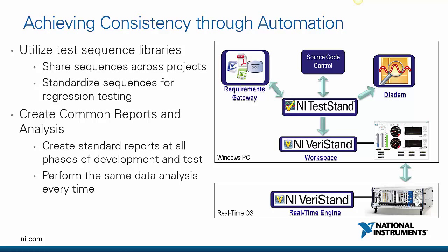Having an automation process in place allows different groups — design engineers and VnV or test teams — to communicate with one another and share a common code base. Here we're looking at a National Instruments software architecture that uses NI Veristand as the core real-time operating engine and NI TestStand as the automation layer that runs the Veristand engine. Because of the flexible nature of NI TestStand, we're able to integrate with other software, things like requirements management, the Requirements Gateway tools, and DIAdem, managing it all through a common source code control repository.